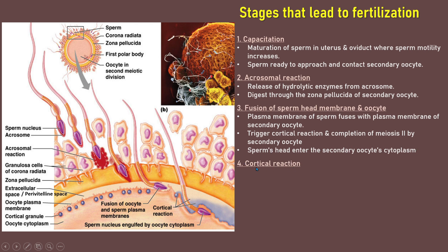The fourth stage is cortical reaction, where the cortical granules will release enzymes into the perivitelline space by exocytosis, and the enzymes will harden the zona pellucida. This is very important to prevent polyspermy, or entry of more than one sperm into the secondary oocyte. Meanwhile, inside the cytoplasm of the oocyte, meiosis II is completed, forming the ovum and second polar body.